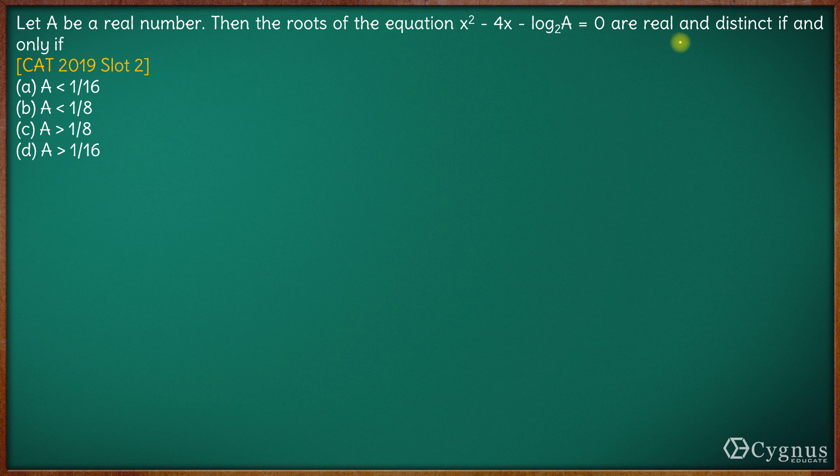For the roots to be real and distinct, D should be strictly greater than zero, not even equal. If we have equal to zero, the roots will become equal. That is not what we want.